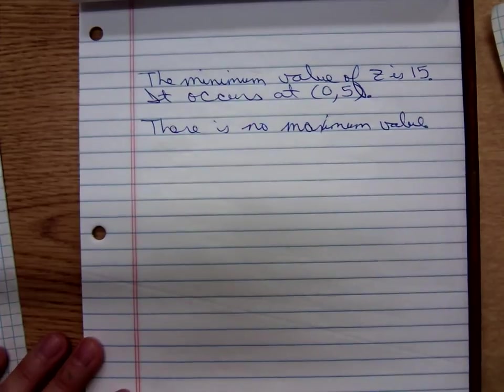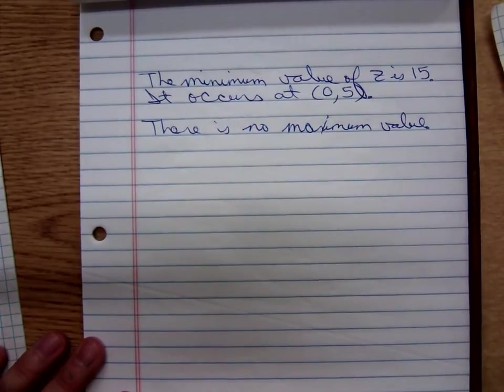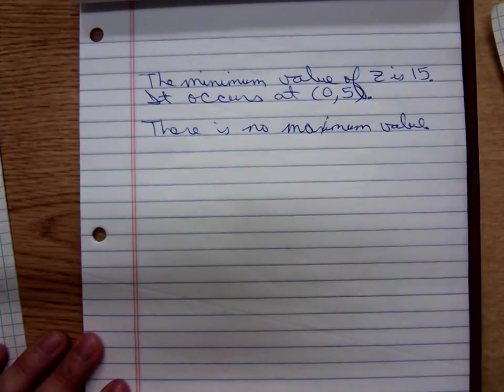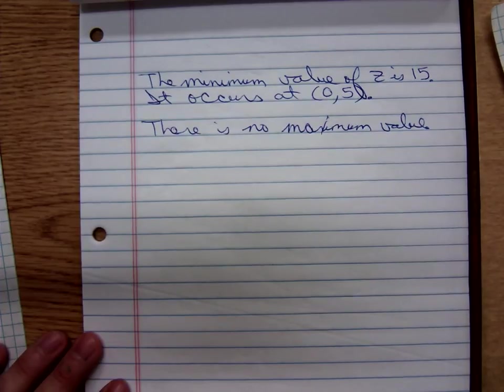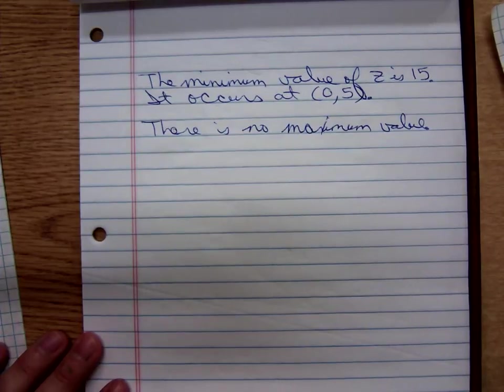Any questions there? For an unbounded feasible region, one or the other will exist, and it will occur at a corner point. But, you won't have both a maximum and a minimum value existing for an unbounded feasible region in the first quadrant. Okay, I'm going to take a break now.